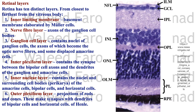Then the nerve fiber layer — the axons of the ganglion cell bodies. Then the ganglion cell layer. The axons of the ganglion cells are the ones that form the optic nerve.